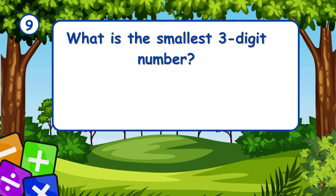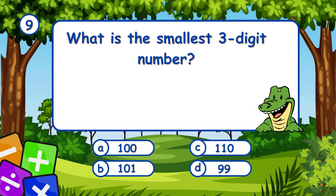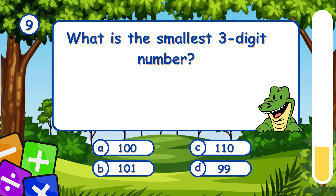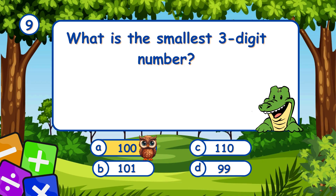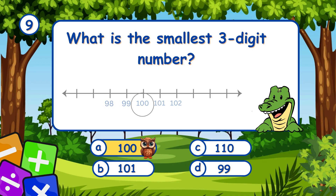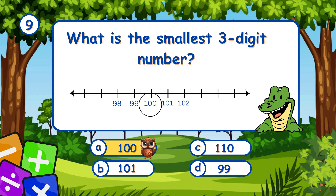What is the smallest 3-digit number? It's A, 100. The smallest 3-digit number is 100.